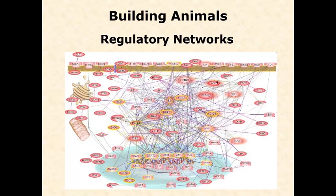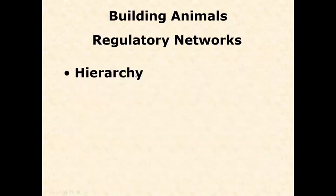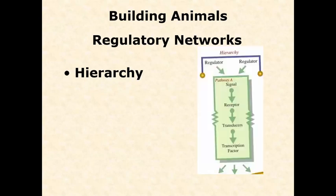In reality, there are these incredibly vast networks that maintain proper cell function, allow cells to do new things if they need to, and these are involved in development. However, usually so that we can visualize it, we break these into components. One of the easiest ways to visualize a very complex network is to look at the hierarchies rather than every single connection. A hierarchy is just one chain in that network where one gene impacts a second gene, impacts a third gene, and so on. These hierarchies are very important and they somewhat simplify these very complex networks of interacting genes.